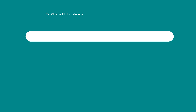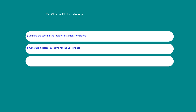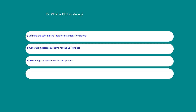What is dbt modeling? Option 1: Defining the schema and logic for data transformations. Option 2: Generating database schema for the dbt project. Option 3: Executing SQL queries on the dbt project. Option 4: Creating database indexes for the dbt project. The answer is 1: Defining the schema and logic for data transformations.